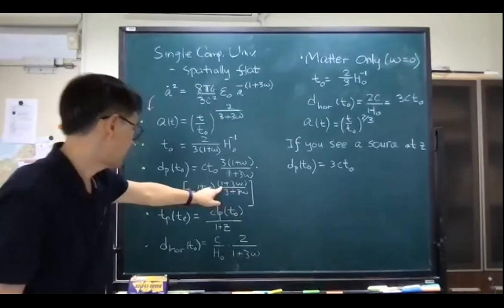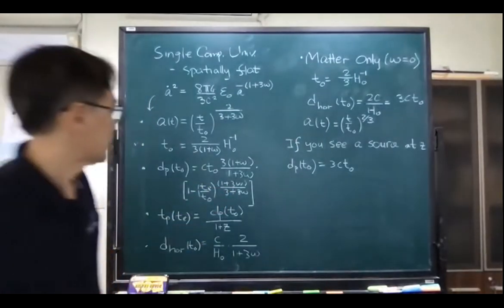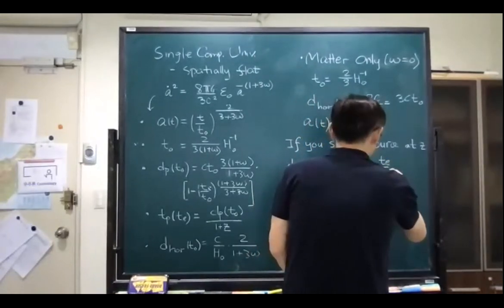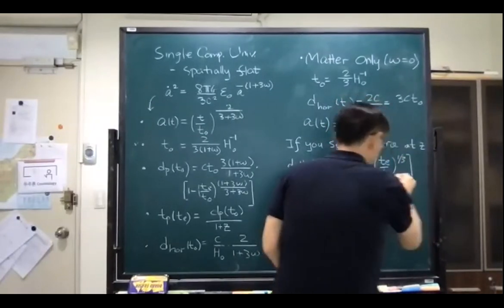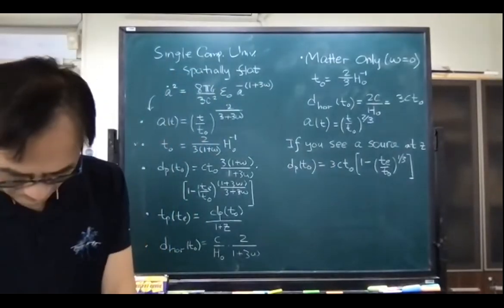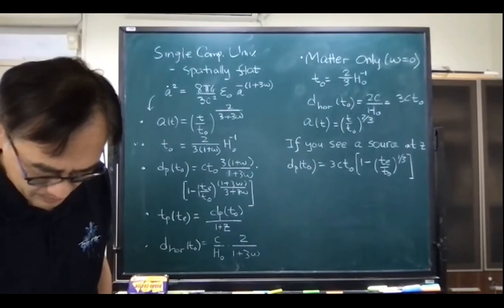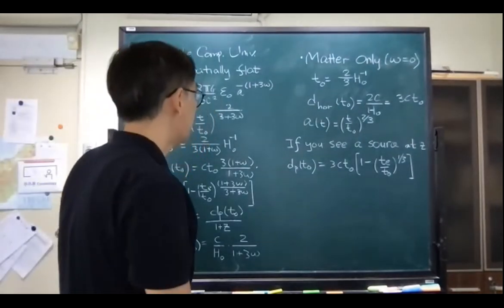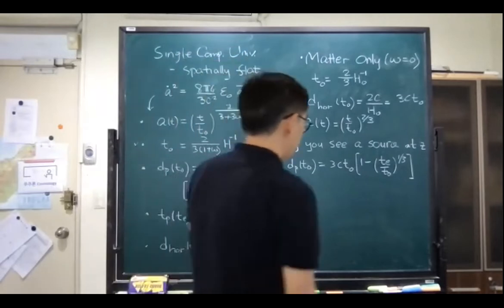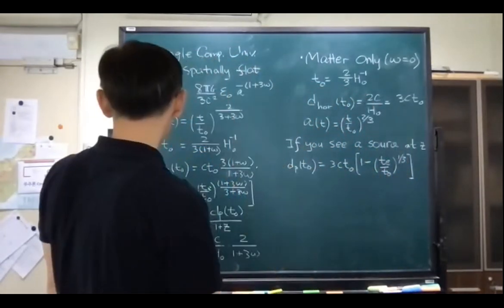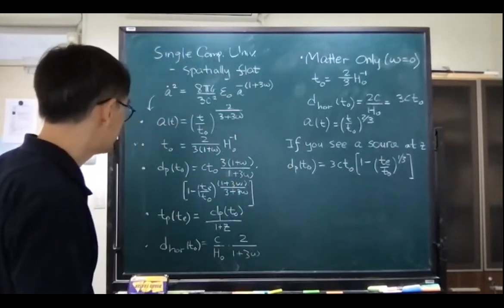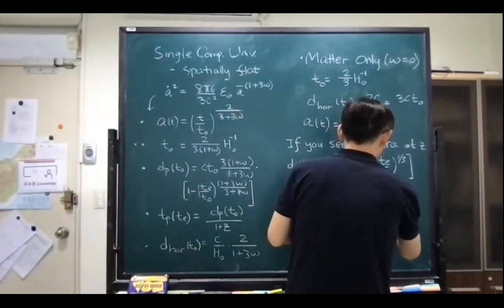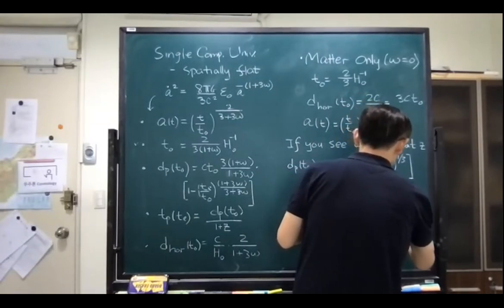So it's like one minus (t_e/t₀)^(1/3). I want to replace this in terms of one over (1+z), because the definition of z is: one plus z equals a(t₀) over a(t_emission).